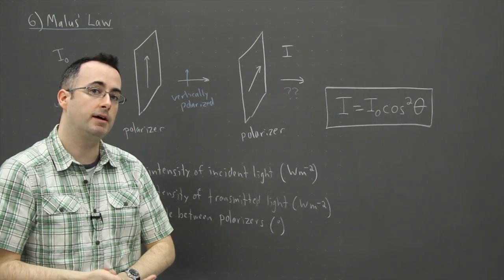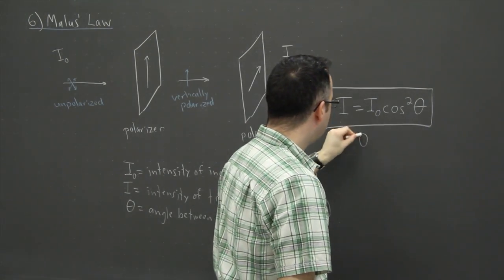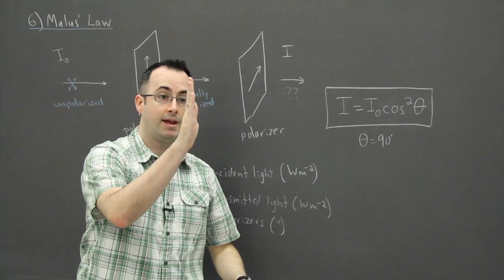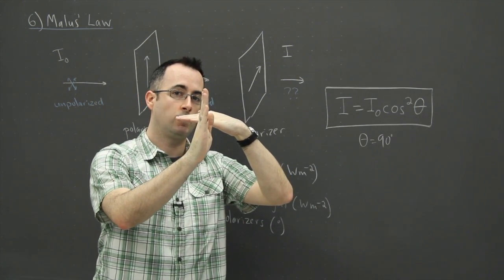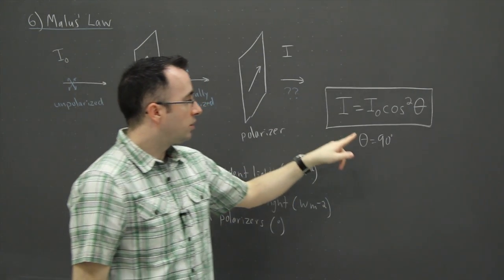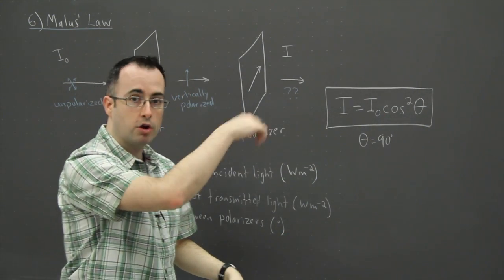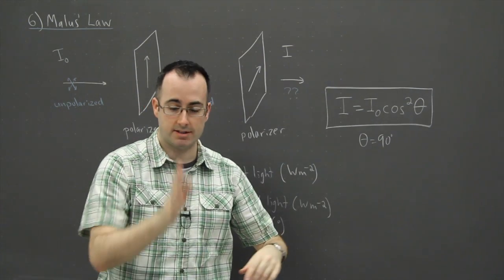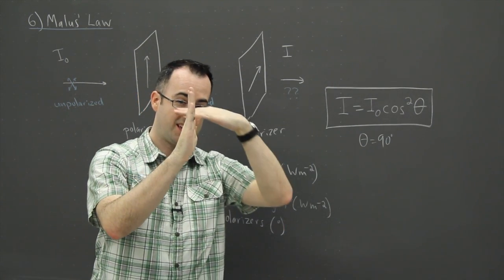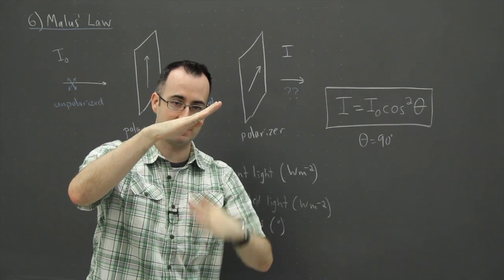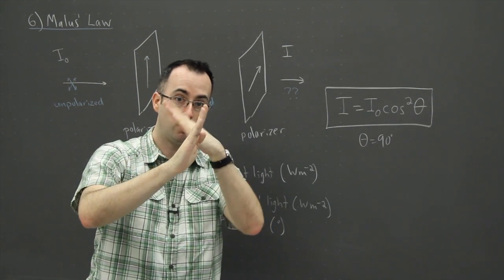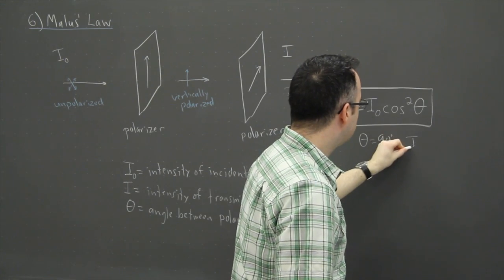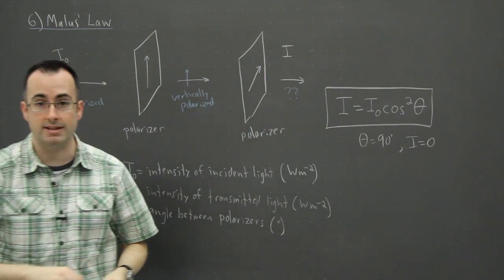It has some really neat practical implications. What if theta equals 90 degrees? In other words, what if one polarizer is vertical and the next polarizer behind it is horizontal? What happens then? Cosine of 90 is zero. Zero times anything is zero. Sometimes these are called crossed polarizers. In other words, one polarizer like this, the other one at 90 degrees to it. All we care about is the angle between these two polarizers. If that angle is 90 degrees, then the intensity of light that's transmitted is zero.